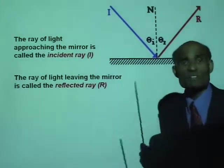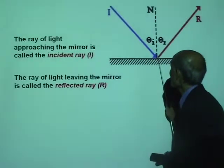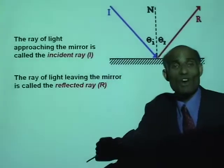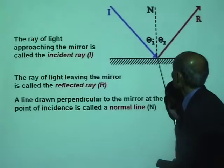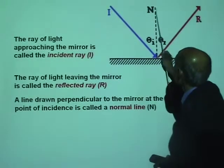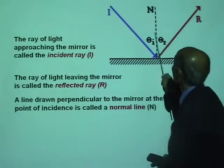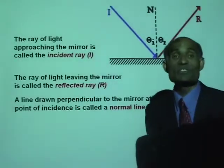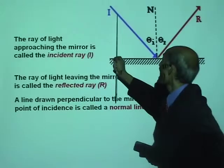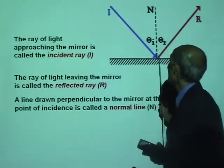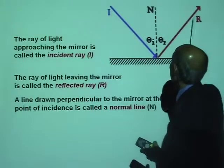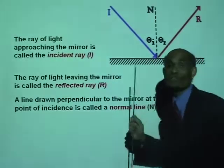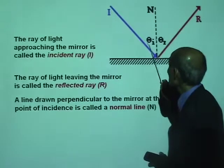The red ray is the reflected ray. The point where the incident ray falls is called the point of incidence. And if you now draw a line at right angles to the mirror, this is called the normal line drawn to the mirror. There are three lines: the incident ray, the reflected ray, and the broken line which is the normal line drawn at the point of incidence.